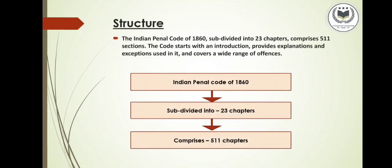Now, the structure of the Indian Penal Code: the Indian Penal Code of 1860 is subdivided into 23 chapters comprising 511 sections. The code starts with an introduction, provides explanations and exceptions used in it, and covers a wide range of offences.